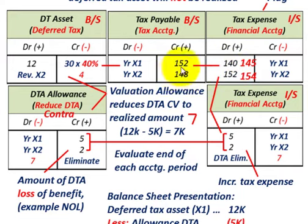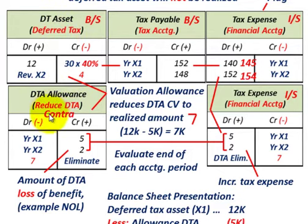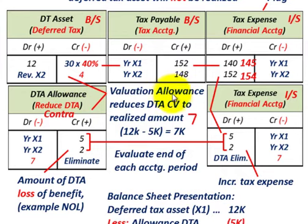Now we have to set up the deferred tax allowance account. That is going to reduce our deferred tax asset, and it is a contra account — so it operates opposite to the deferred tax asset. For this valuation allowance, it's going to reduce our deferred tax asset's carrying value to the realized amount.